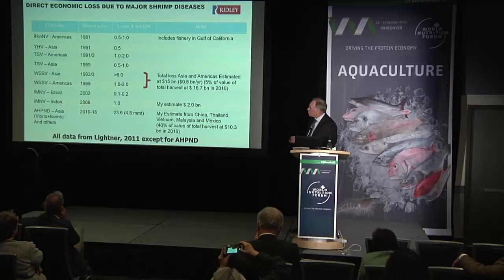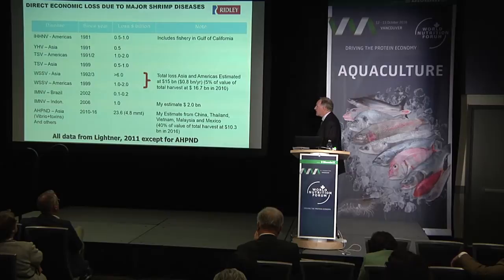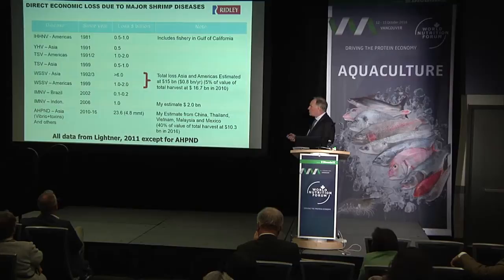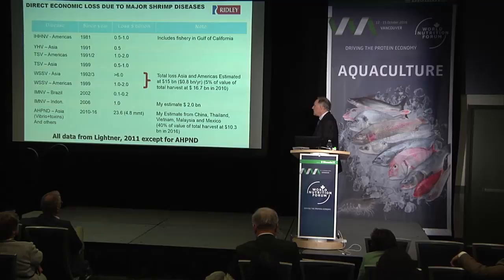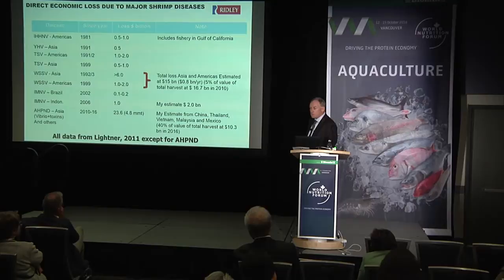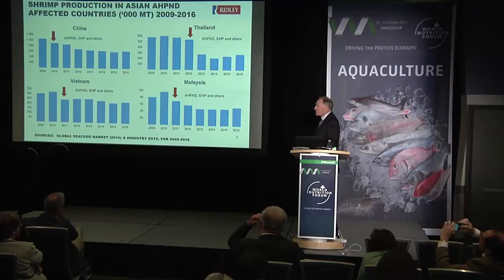The most significant virus was White Spot, both in Asia and the Americas, resulting in about $15 billion in losses between 1992 and 2011 — about 5% of total harvest value. Then IMNV in Brazil and Indonesia. And now AHPND, not alone but in concert with other disease issues. The estimate I've derived is that we've lost about 40% of the total value of the harvest — amounting to some $23.6 billion and about 4.8 million metric tons — just between 2010 and 2016.